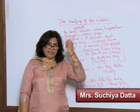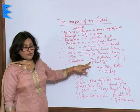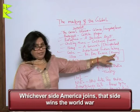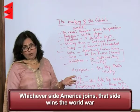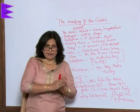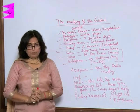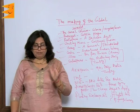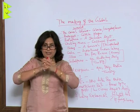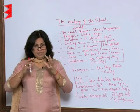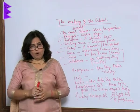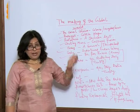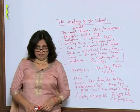It is generally France and Germany's internal conflict which leads to a bigger world war, and it is always Germany which has lost. Whichever side America joins, that side wins the world war. America joins at the end, always joining with Britain. Before that, America makes itself very strong economically by selling and supplying all that was required to fight such mighty wars, and it is because of these two world wars that America emerged as the strongest economy in the world.